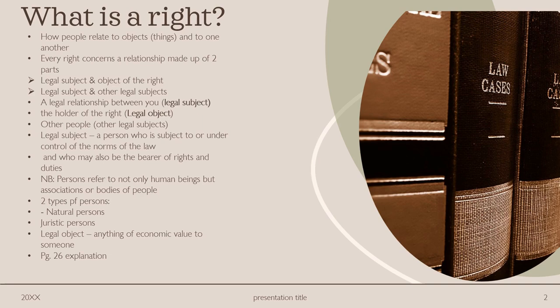There are two types of persons: natural person and a juristic person. A legal object is anything of economic value to someone.